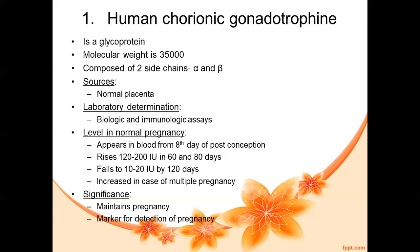The significance of HCG in pregnancy: HCG is required to maintain the pregnancy, and most importantly, it is a marker for the detection of pregnancy. HCG is excreted through the urine, and when urine is tested, the presence of HCG indicates whether the person is pregnant. So the two key roles of HCG are detection of pregnancy and maintenance of pregnancy.